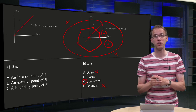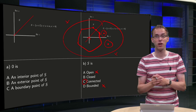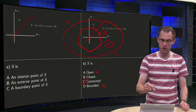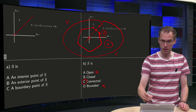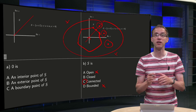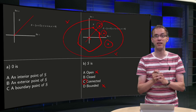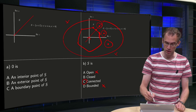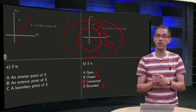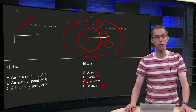How about closed? A set S is closed if it contains all its boundary points, or equivalently if its complement is open. The complement of S is the line — is that an open set? No: take any point on the line and draw a small disk around it, it does not contain points only of the line, so the complement is definitely not an open set, and our set is not closed either. So we have a set which is neither open nor closed, which is connected and unbounded.